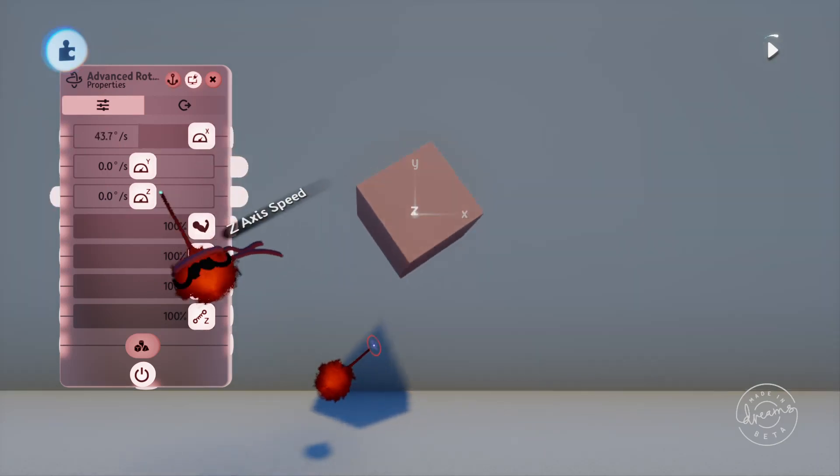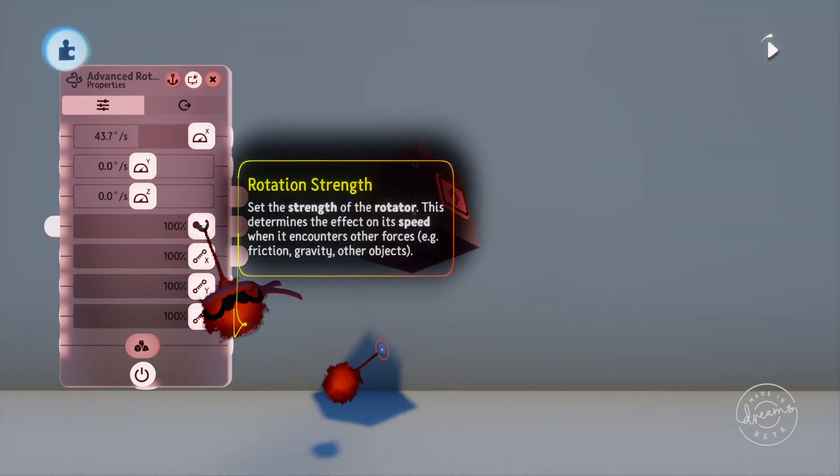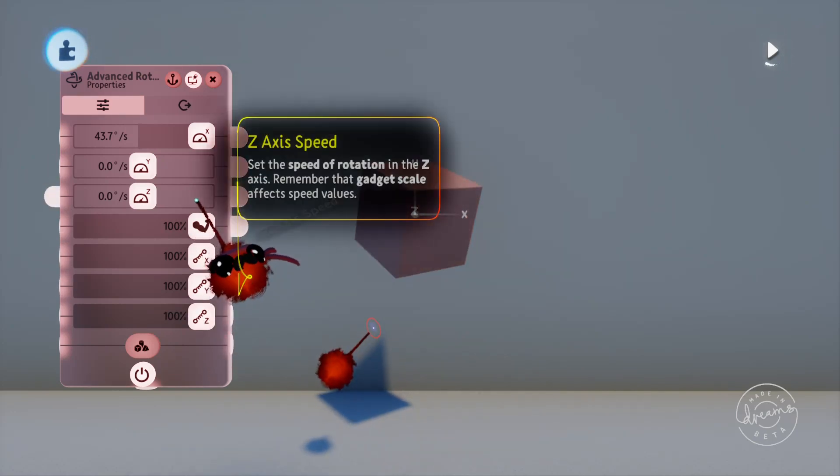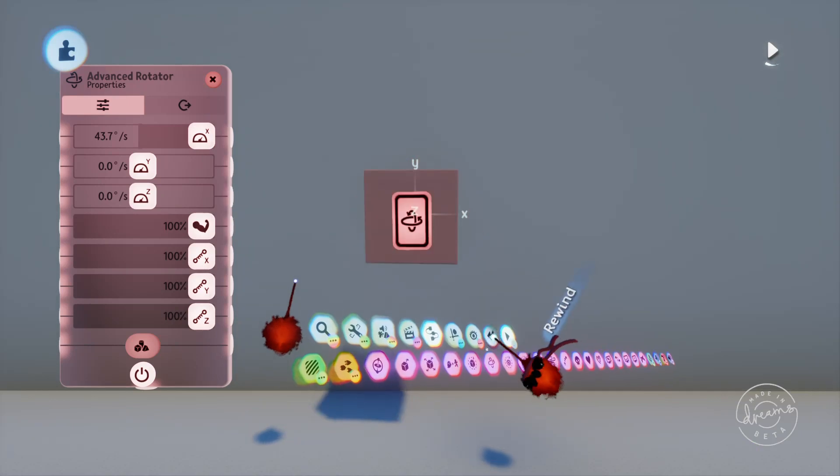We've also again got the strength of the rotation and the local space setting down the bottom which changes whether the rotation is relative to the object or to the grid. Also on the face of the gadget we have the options to change the X, Y and Z speeds directly.